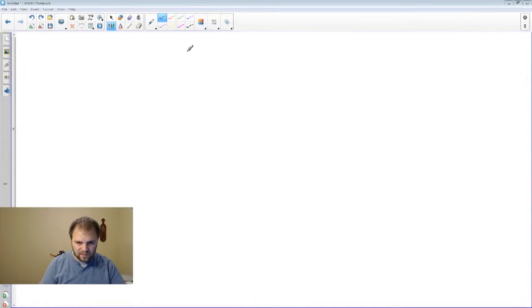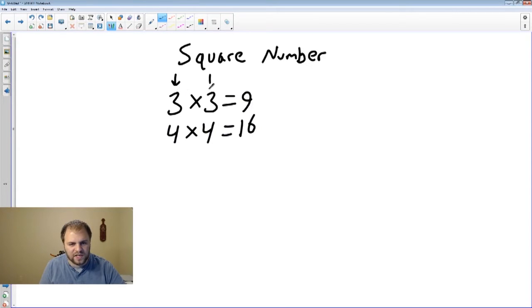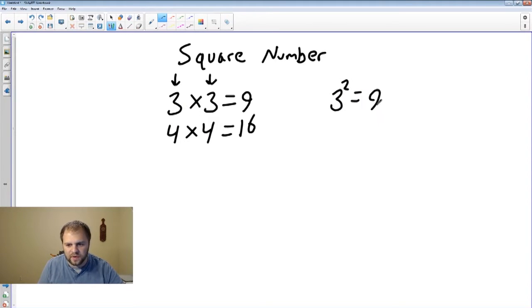A square number has an array that has the same number of rows as columns. In other words, we looked at 3 by 3 equaled 9 and we also took a look at 4 times 4 which equals 16. This representing our rows and this representing our columns and our arrays. But as you can see it's just the same number multiplying with itself. In math we have a short way to write this.